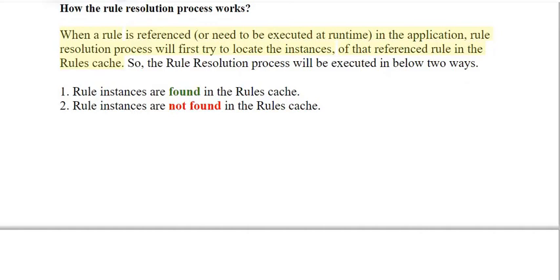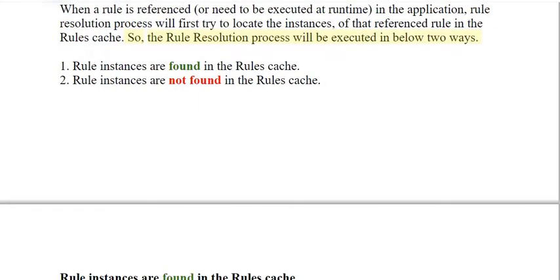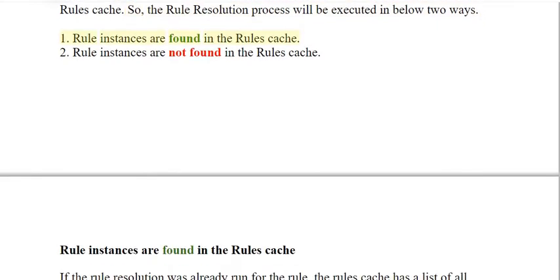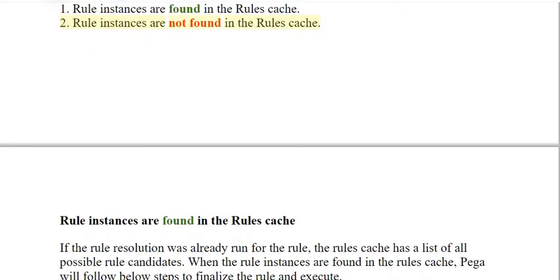How does the rule resolution process work? When a rule is referenced or needs to be executed at runtime in the application, the rule resolution process will first try to locate instances of that referenced rule in the rules cache. The rule resolution process will be executed in two ways: one, rule instances are found in the rules cache; two, rule instances are not found in the rules cache.